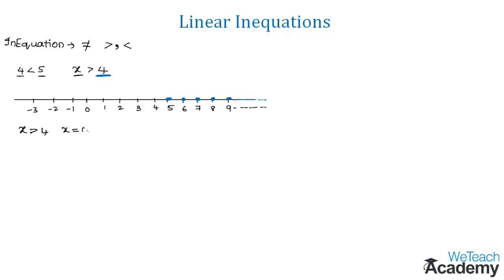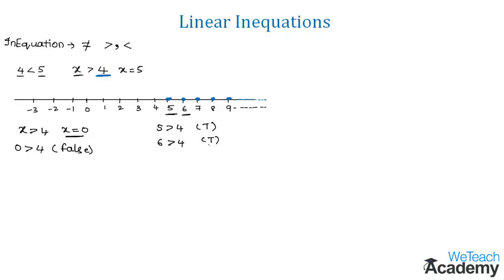First, let us substitute x = 0. On substituting, we get 0 > 4, which is a false statement. If we substitute x = 5, we get 5 > 4, which is a true statement. Similarly, x = 6 gives 6 > 4, also a true statement. So the inequation x > 4 is satisfied only when x is greater than 4, giving an infinite solution set.